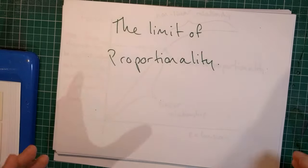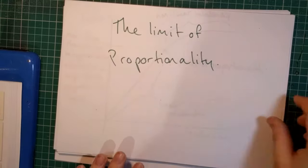up to a point. There is a force that can be applied to an object beyond which those two variables are no longer proportional. We call that the limit of proportionality.